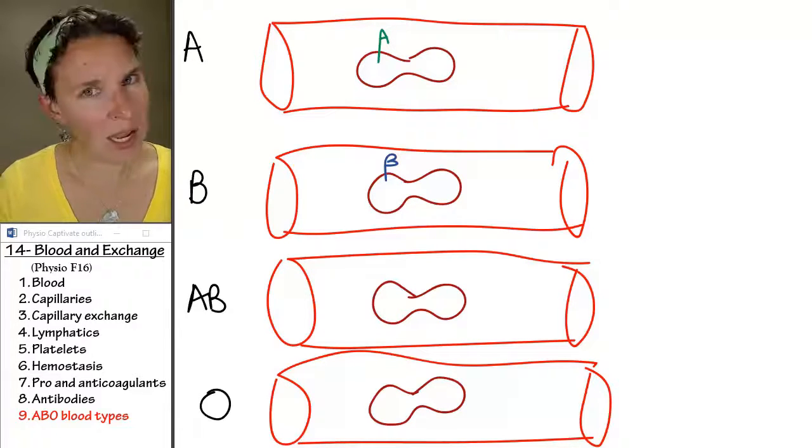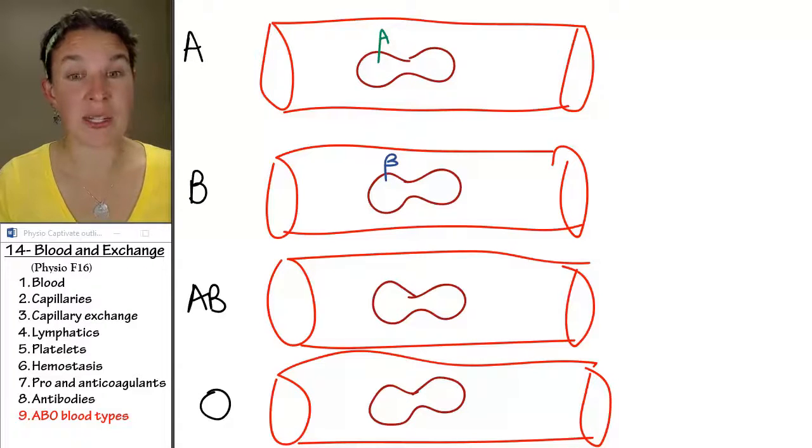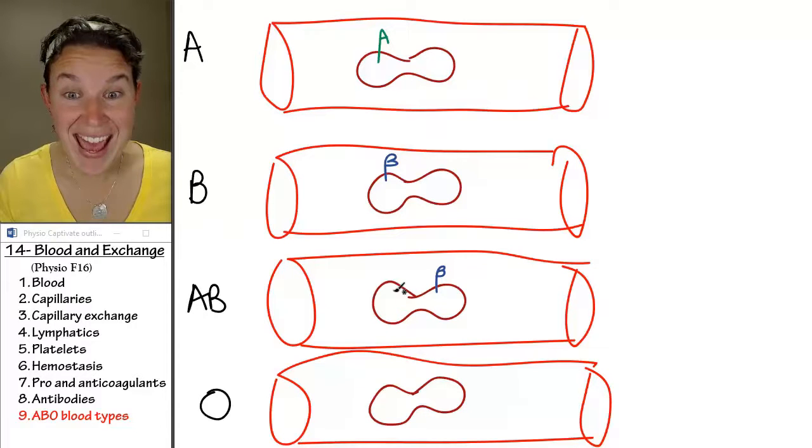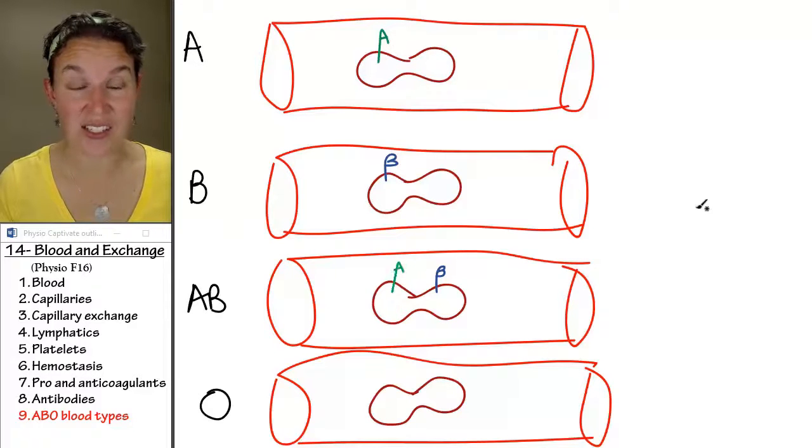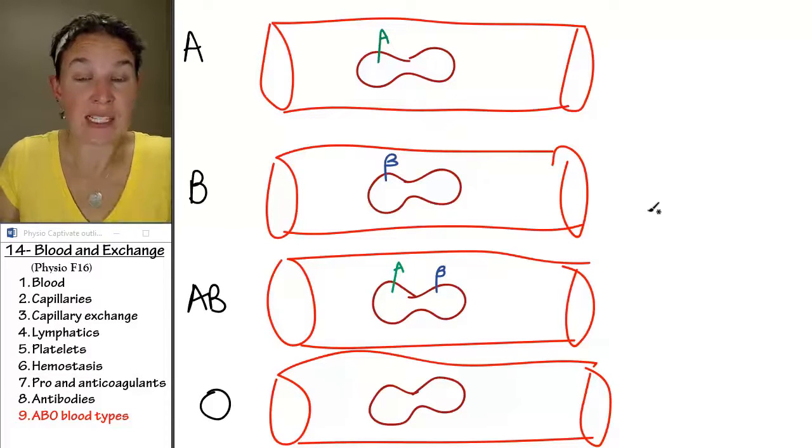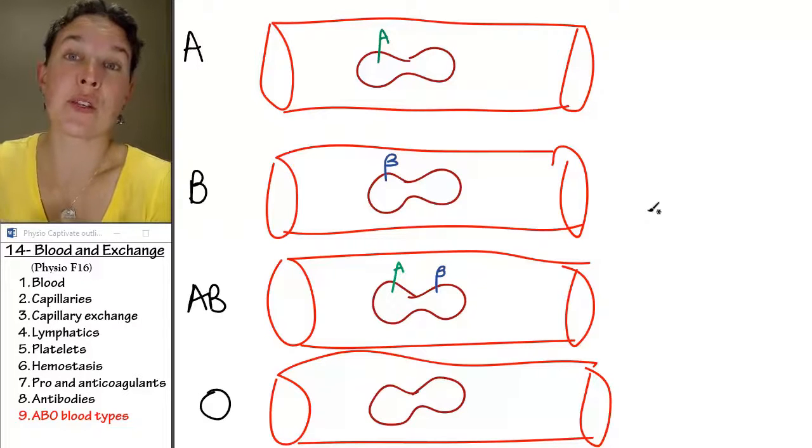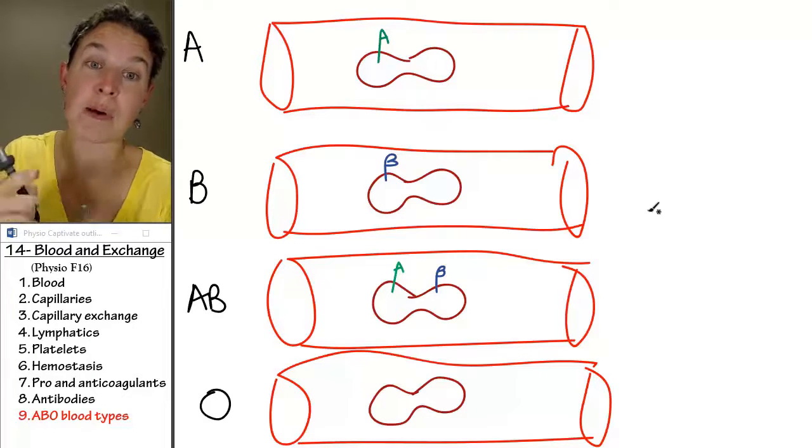What kind of antigen are you going to expect in a B blood? The red blood cells have B antigens and A antigens. They have genetics that produce both of those possible markers.